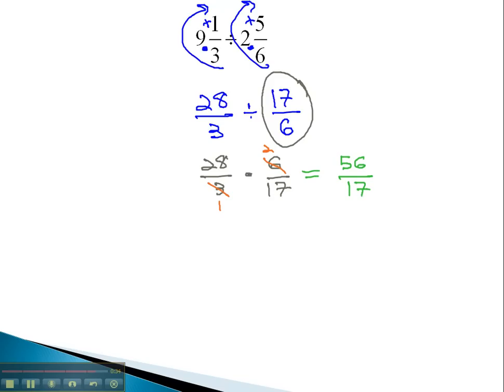To convert this back to a mixed number, we simply divide 17 into 56. It goes in there 3 times, and 3 times 17 is 51. When we subtract, we find we have a remainder of 5. As a mixed number, we have 3 wholes and 5 over the denominator of 17.